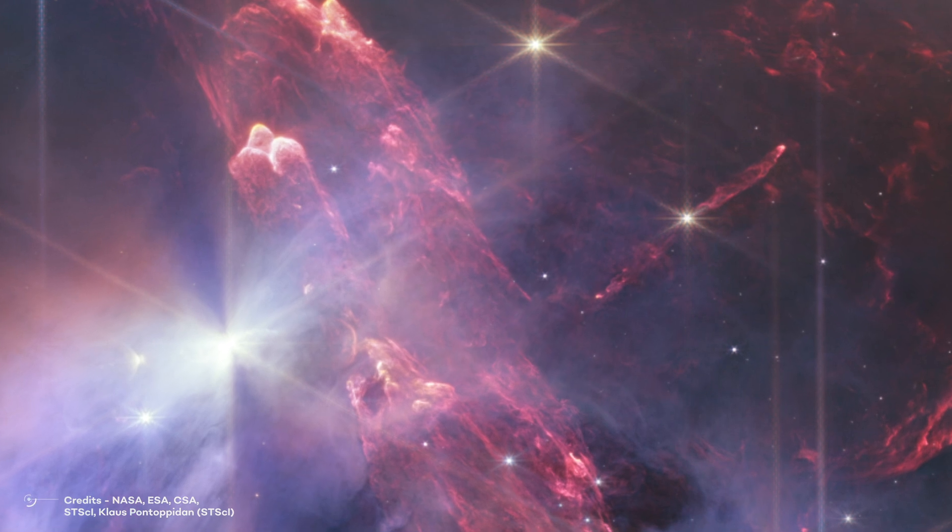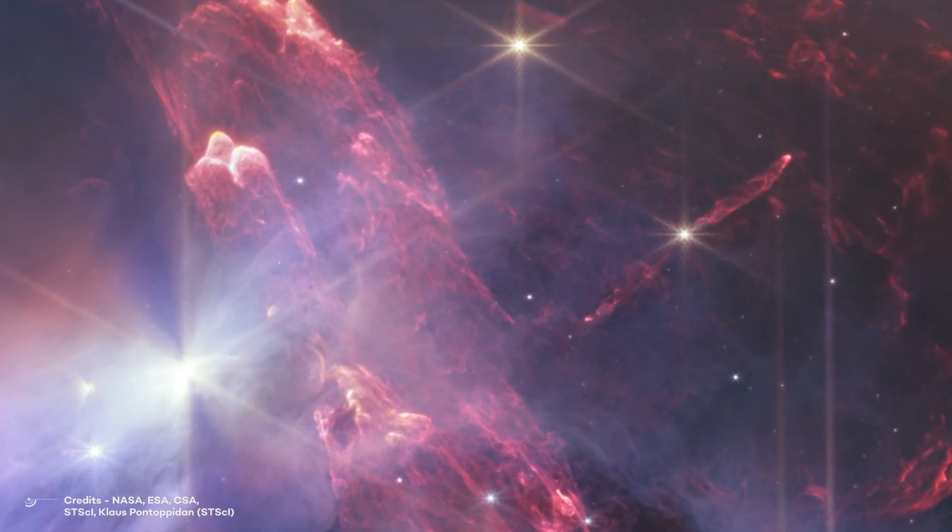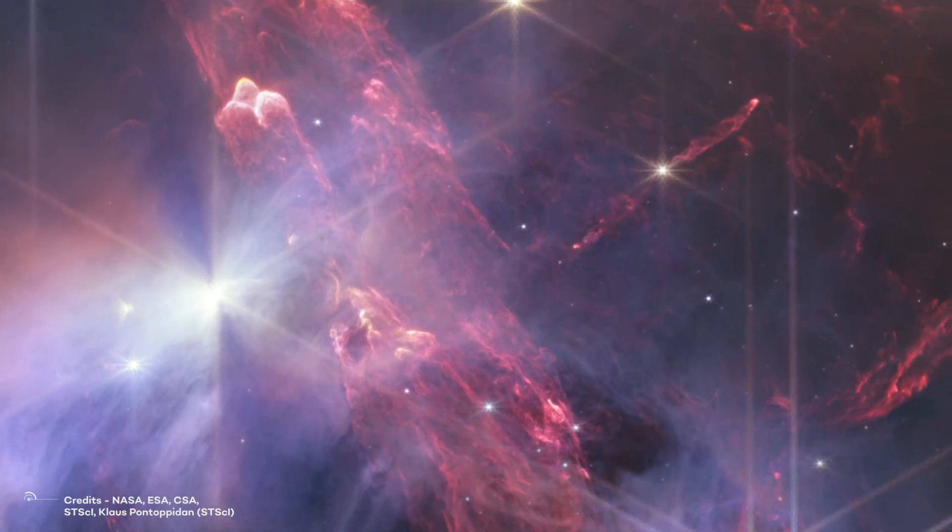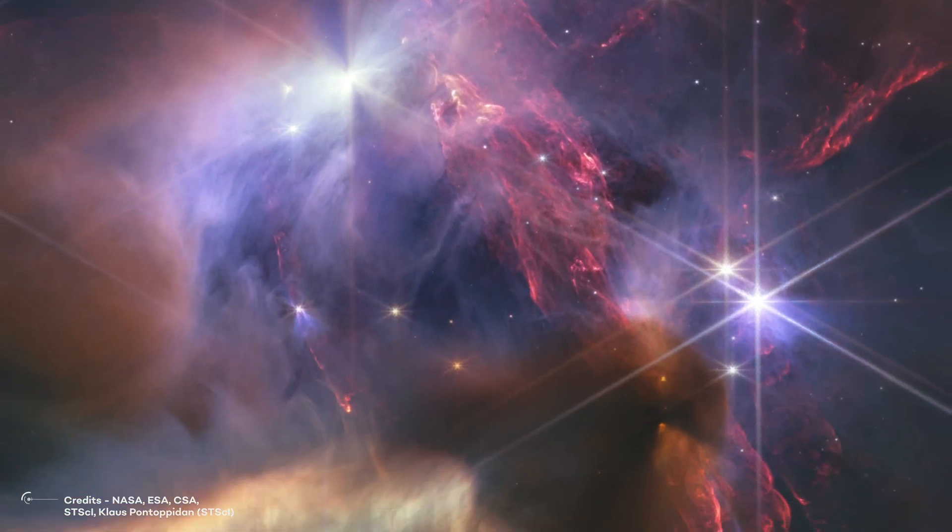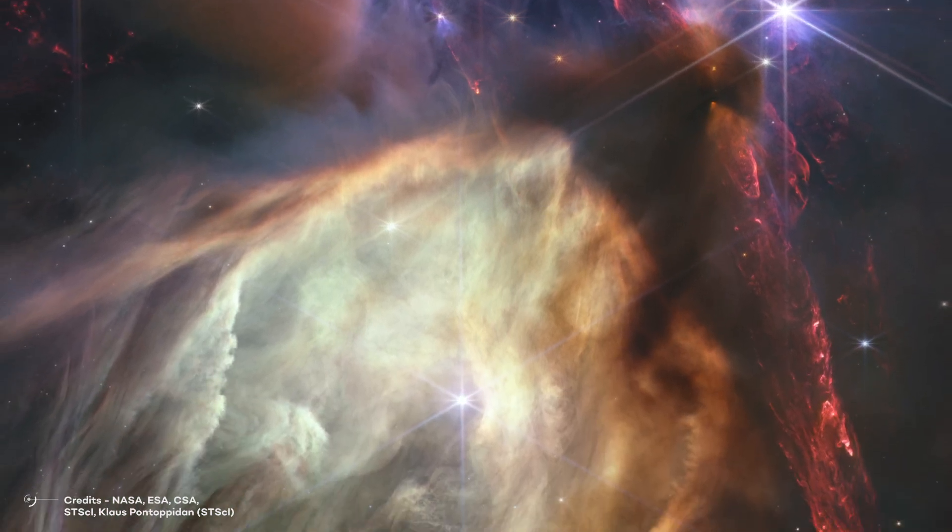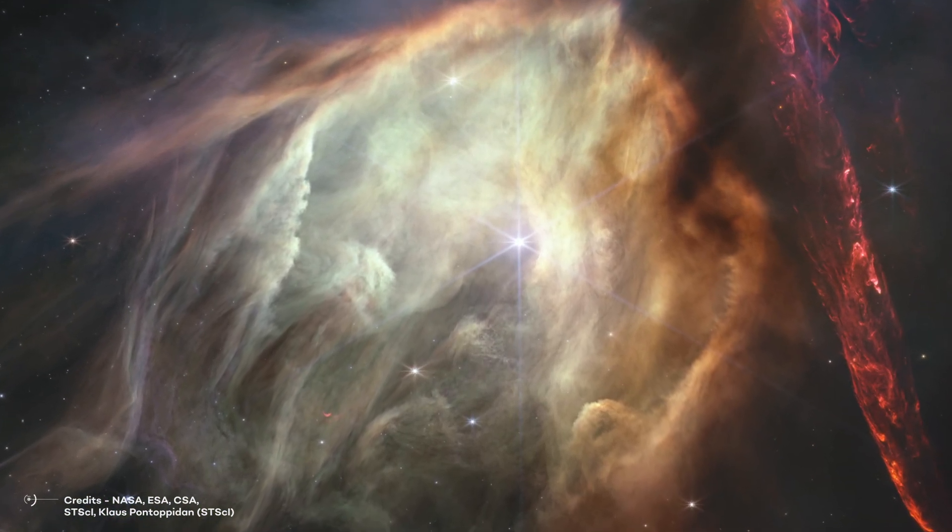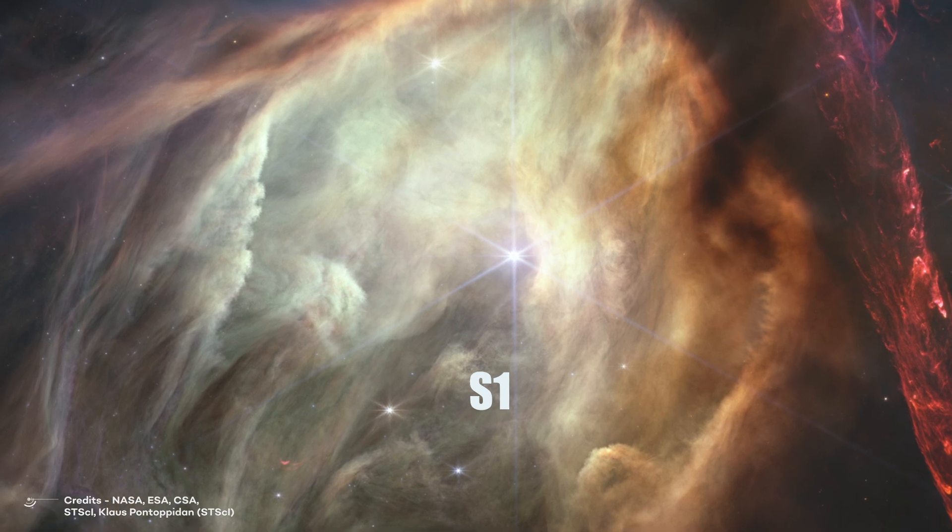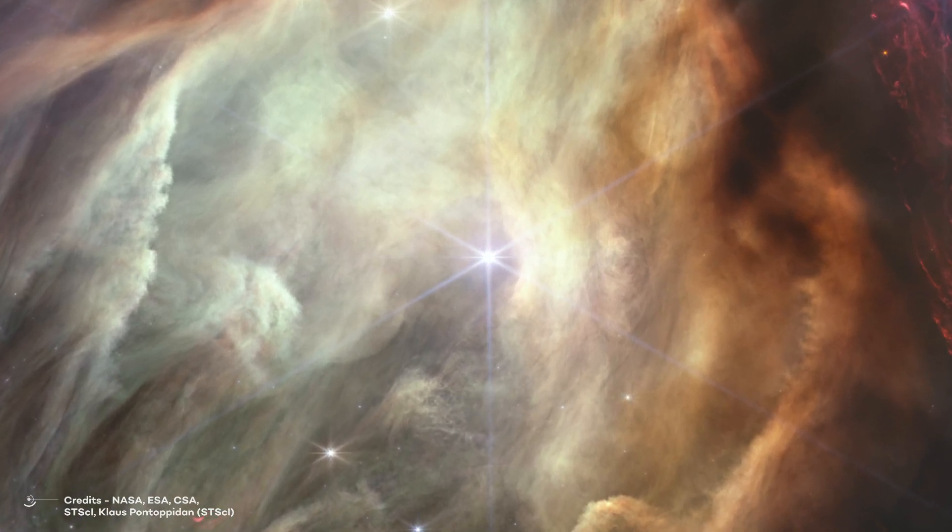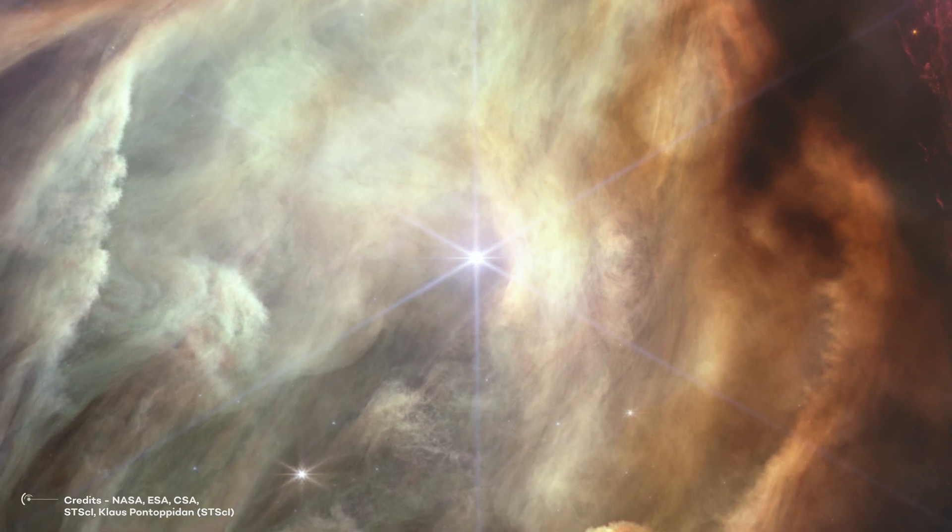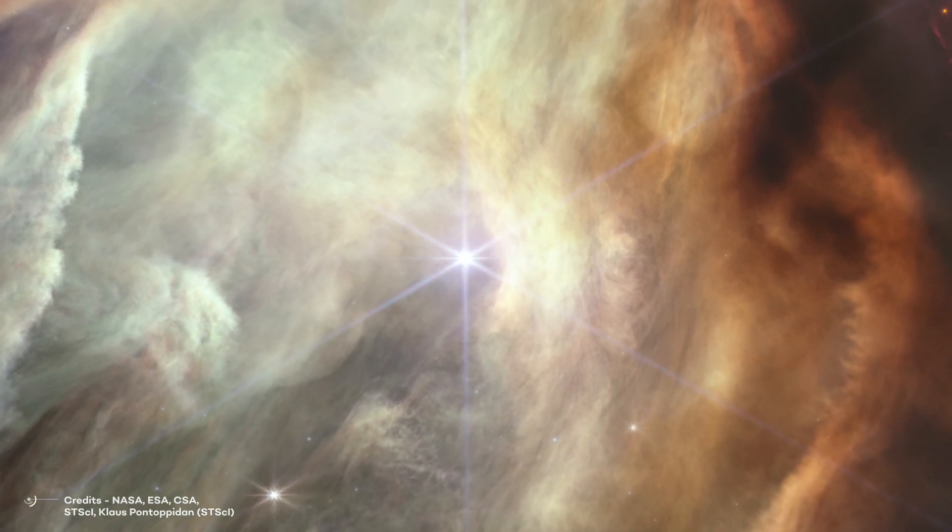These disks are like the building blocks of future planetary systems. The young stars at the center of these disks are similar in size to our Sun or even smaller. However, among all the stars in this image, the most massive one is called S1. S1 can be seen in the lower half of the image, surrounded by a glowing cave-like structure. This structure is actually being carved out by the intense winds coming from S1.